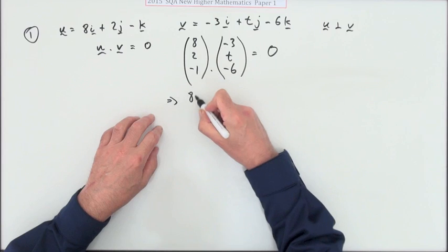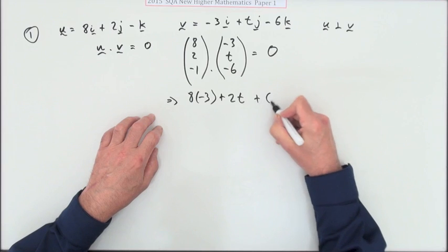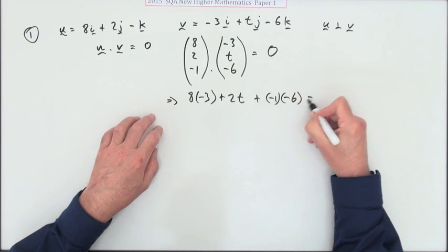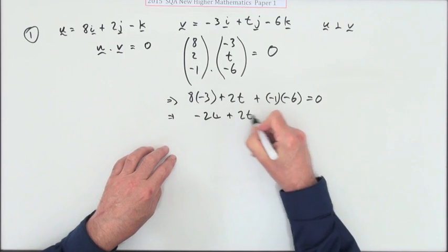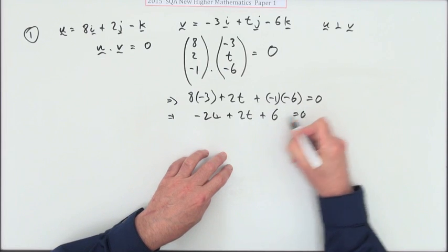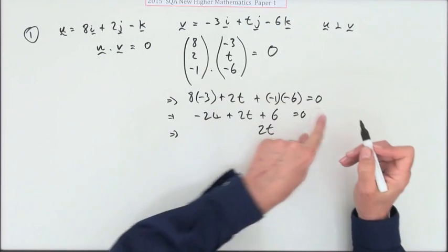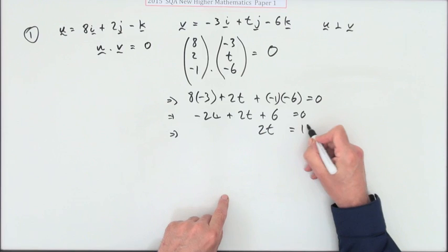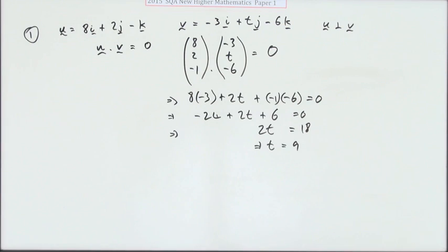Would be 8 times negative 3 plus 2 times t plus negative 1 times negative 6, and that should all come to zero. So negative 24 and 2t and 6 should equal zero, so 2t should equal 24 minus 6 which is 18, so finally t should equal 9. There we go.